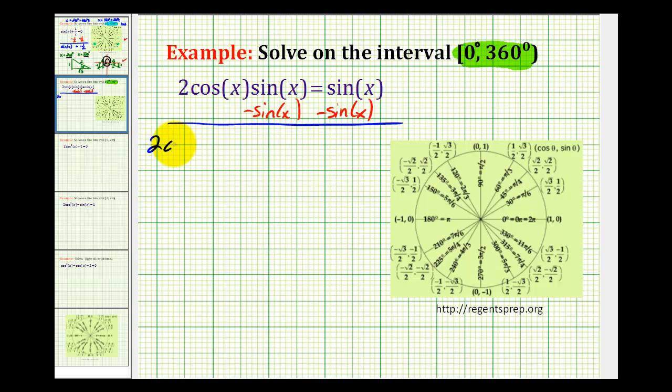we would have 2cos(x)sin(x) - sin(x) = 0.